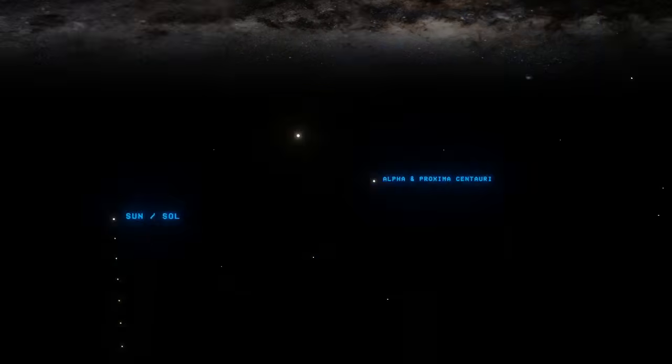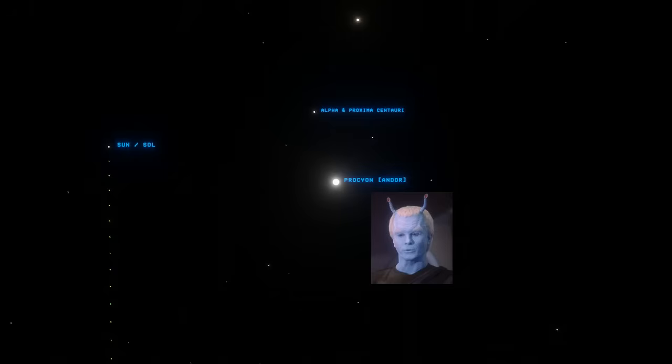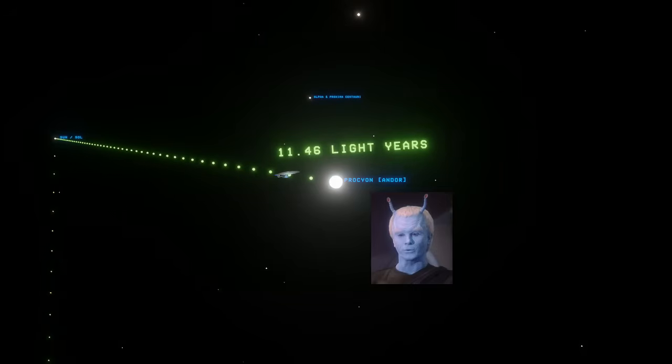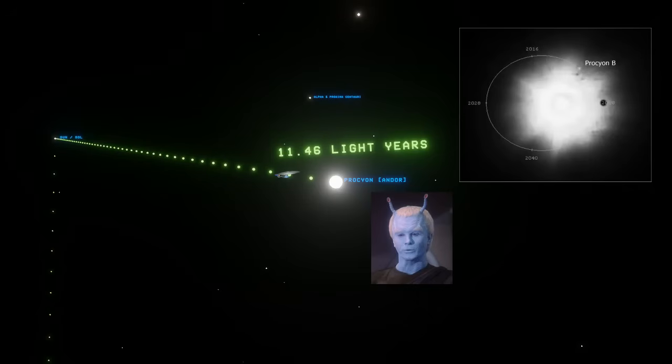Now onto Andor, or Andoria, home system of the feisty, blue-skinned Andorians. Apparently the home system of Andor according to Star Trek star charts is Procyon. Procyon is a late stage F or white star, the 8th brightest star in our sky. It is 11.46 light years from Earth, and would take almost 11 days at warp 6 for the Enterprise D to travel there from Earth.